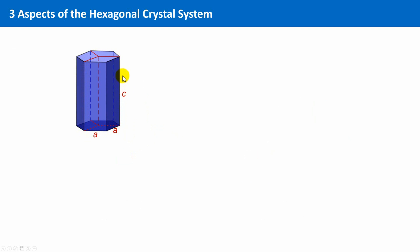The basal plane has edges of identical length, A equals B, and C is different, and the angle here is 120 degrees. If we look from above, we see this projection. The lattice points of one unit cell are drawn here as blue circles.